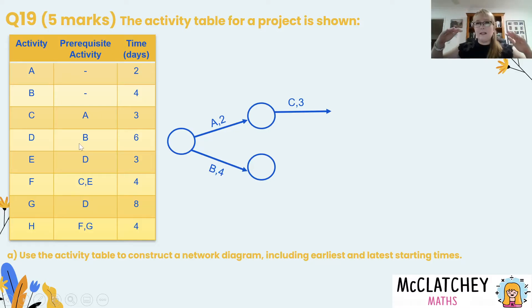So I always like to progress down my table but also looking at where in the diagram I'm going to draw these things. D comes out of its prerequisite activity of B. So far so good.